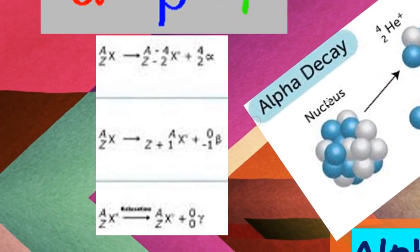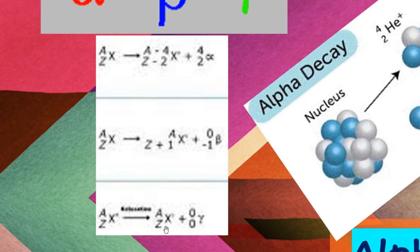In beta decay, Z increases by one unit and A remains the same. In gamma emission, there is no change in the nucleus — only gamma rays are emitted.